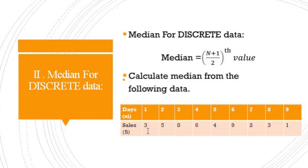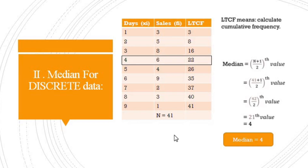For discrete data, we calculate the less than cumulative frequency. The cumulative frequencies are: 3, 3+5=8, 8+8=16, 16+6=22, 22+4=26, 26+9=35, 35+2=37, 37+3=40, 40+1=41. Total frequency capital N is equal to 41.